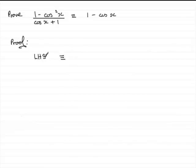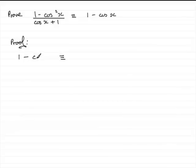I don't often go for this style, so I'm going to show you that I just normally copy this down. So we'll write: 1 minus cos squared x, all divided by cos x plus 1.